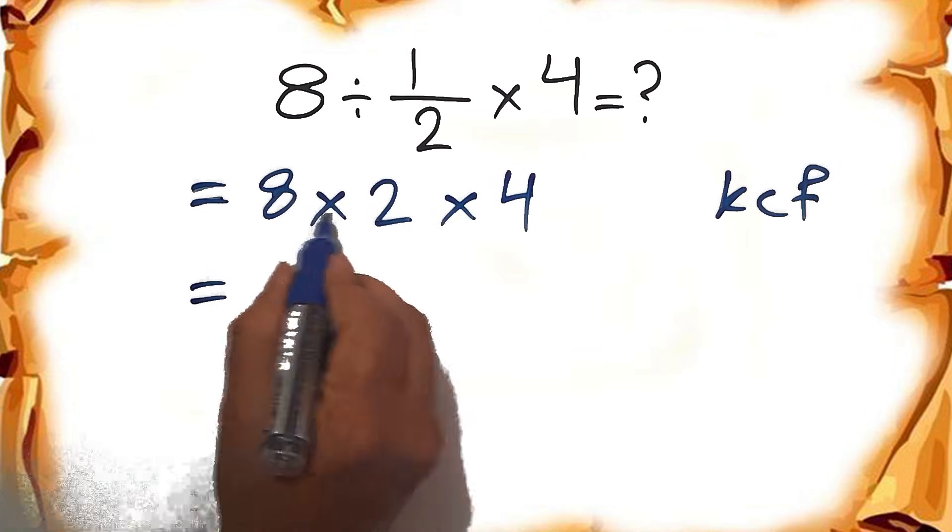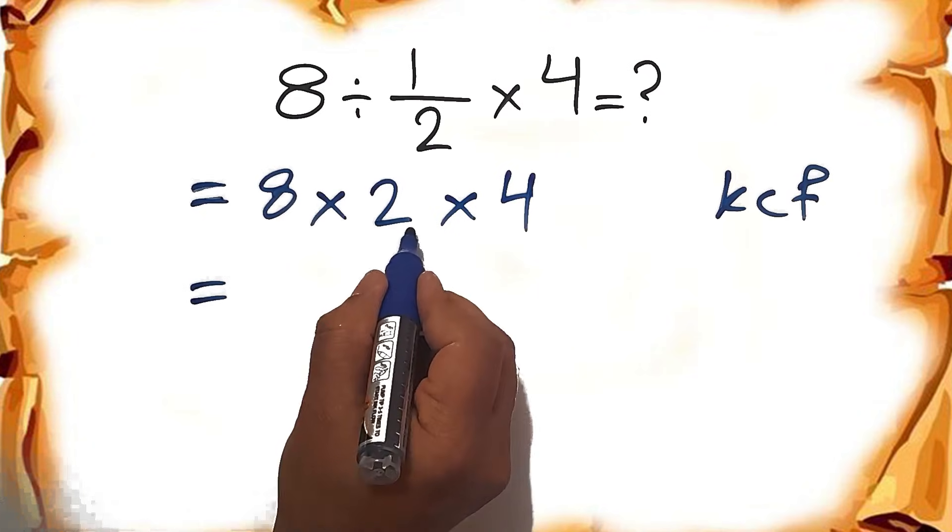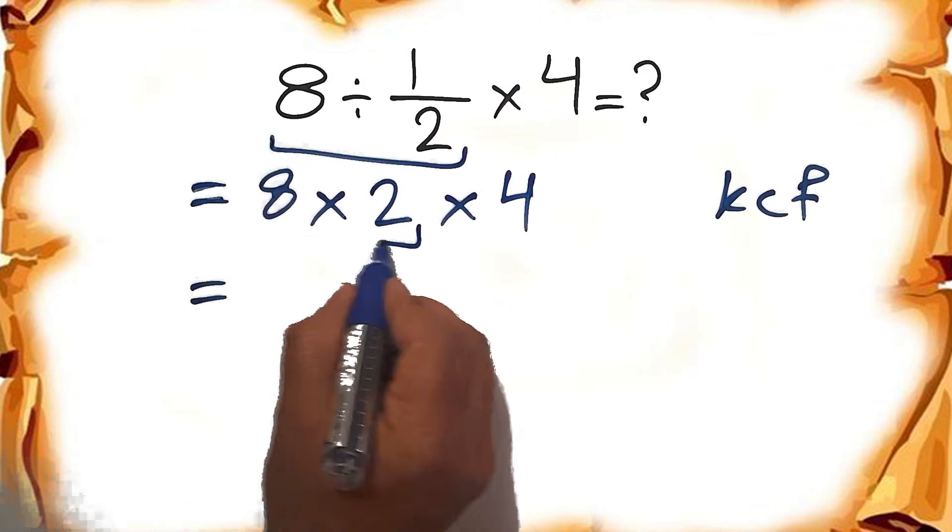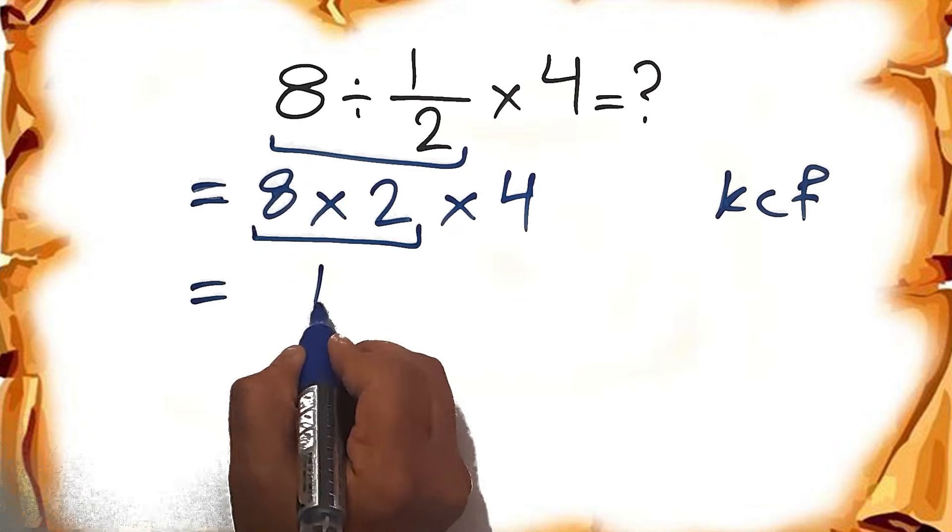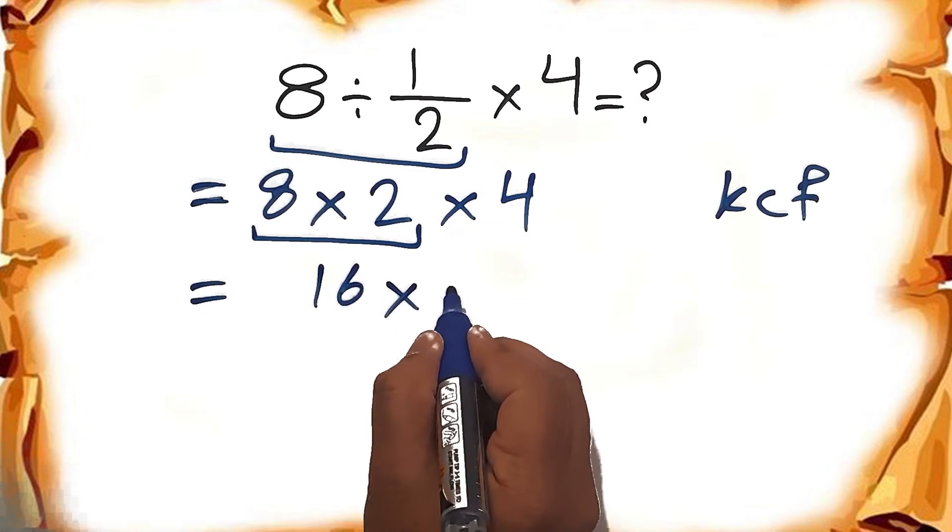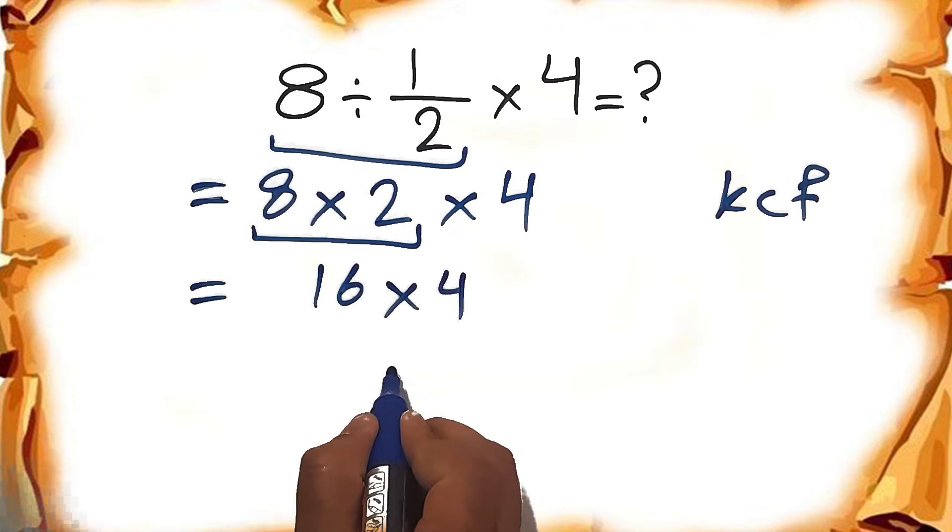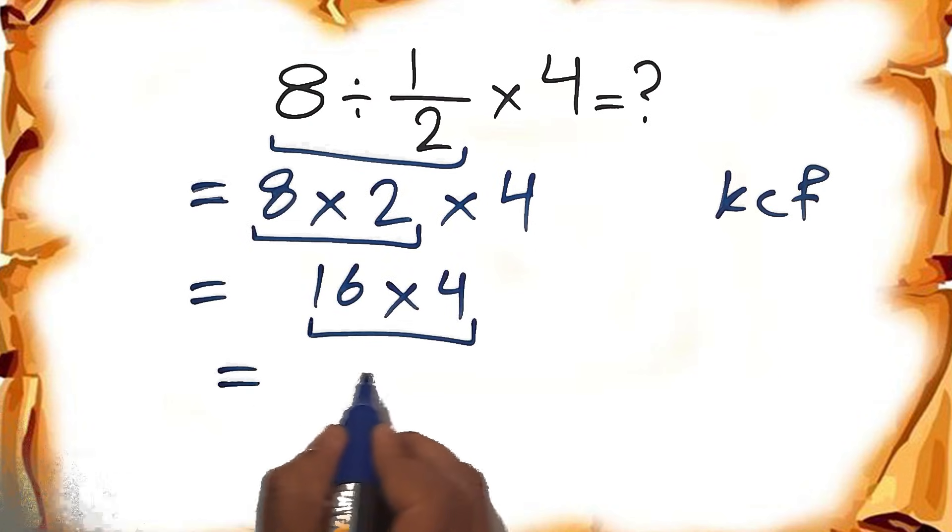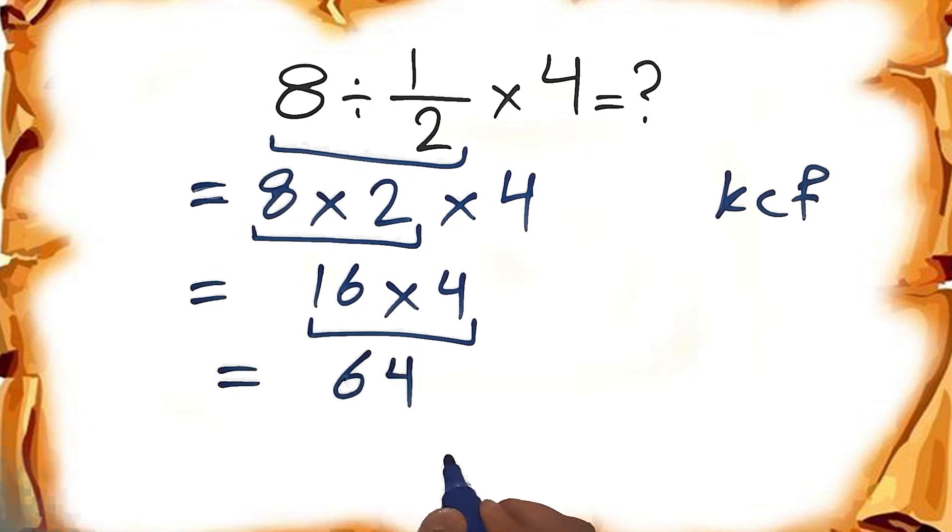8 times 2 equals 8 times 2 equals 16. 16 times 4 gives us 64. So our final answer to this problem is just 64.